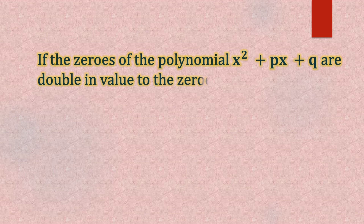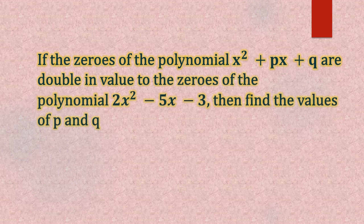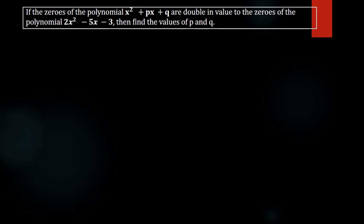If the zeros of the polynomial x² + px + q are double in value to the zeros of the polynomial 2x² - 5x - 3, then find the values of p and q. So, here it is given that zeros of x² + px + q are double in value to the zeros of 2x² - 5x - 3. We have to find what p and q are.